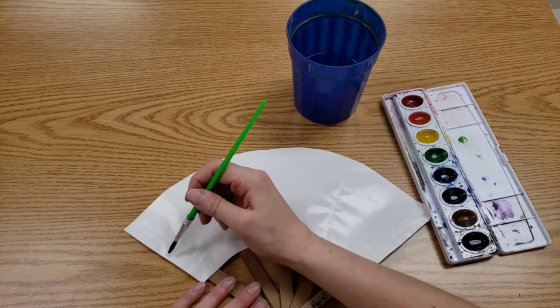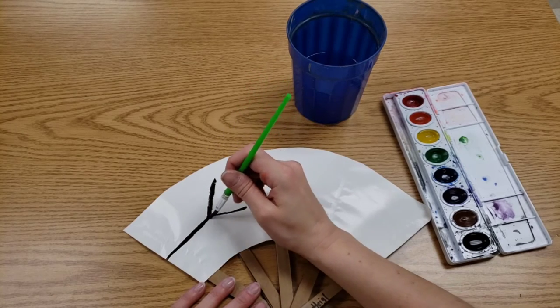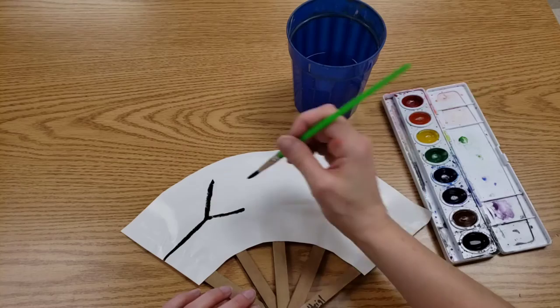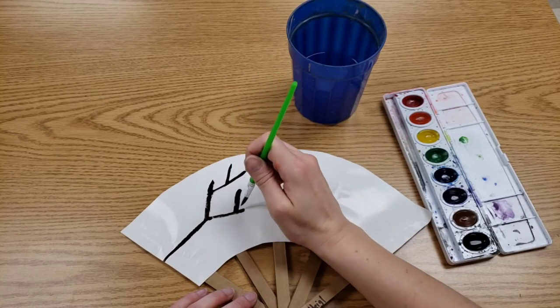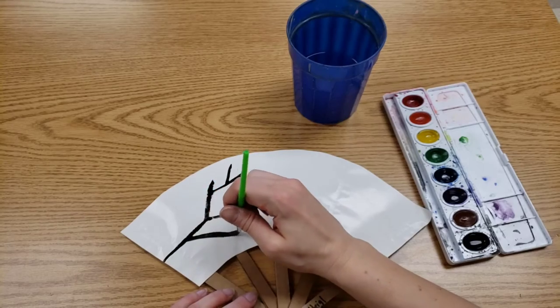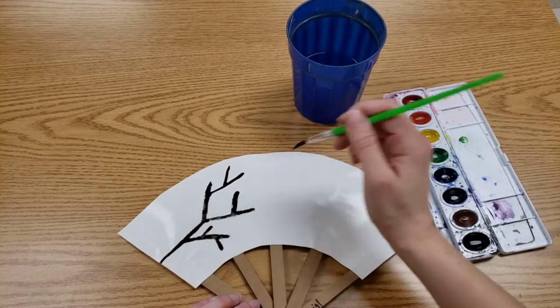I'm going to start on the end and paint a Y, and then we go out from there. We add more branches onto the letter Y so it looks like a cherry blossom tree.